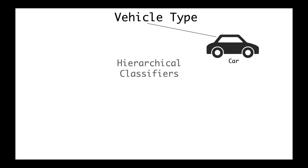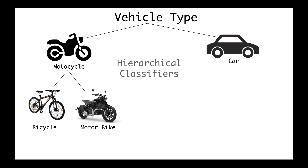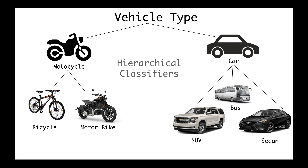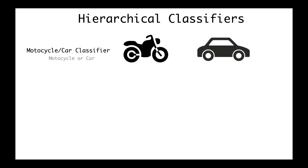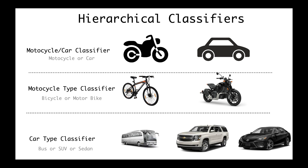The first approach is to consider a hierarchical classifier. In this case we start by building a classifier for the parent types — car and motorcycle. Then, given that an object is a motorcycle, we build a specific classifier for the different types of motorcycle, giving us bicycle and motorbike. Similarly, we build another classifier specifically for cars to classify SUV, bus, and sedan. In total you end up with three classifiers: one for motorcycle versus car, one for bicycle and motorbike, and one for bus, SUV, and sedan.